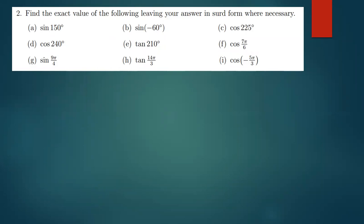Alright, so this is question two. Question two is asking us to find the exact value of the following, leaving your answer in surd form where necessary. They are asking us to find these trig ratios. There are a lot of ways you can use to find the trigonometric ratios of these angles. First of all, you need to know the values of the solutions of special angles.